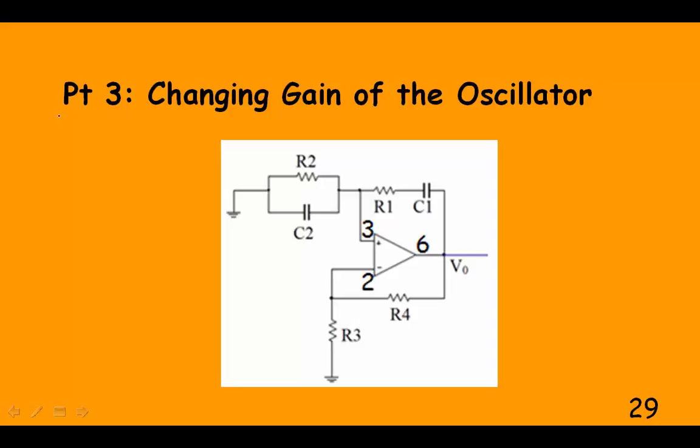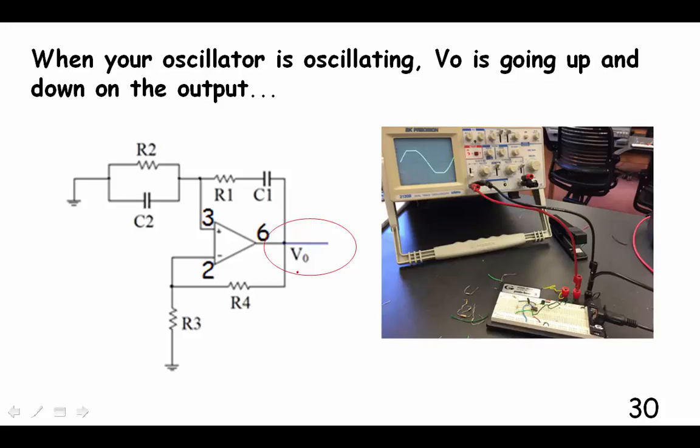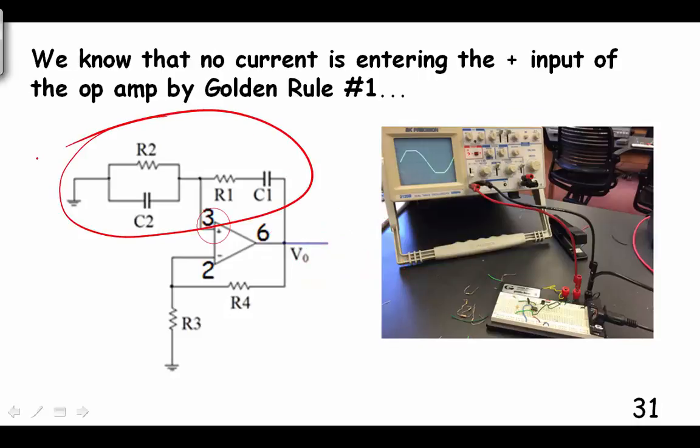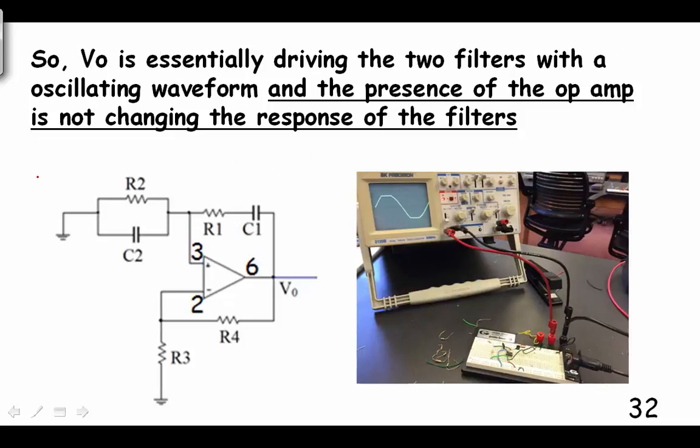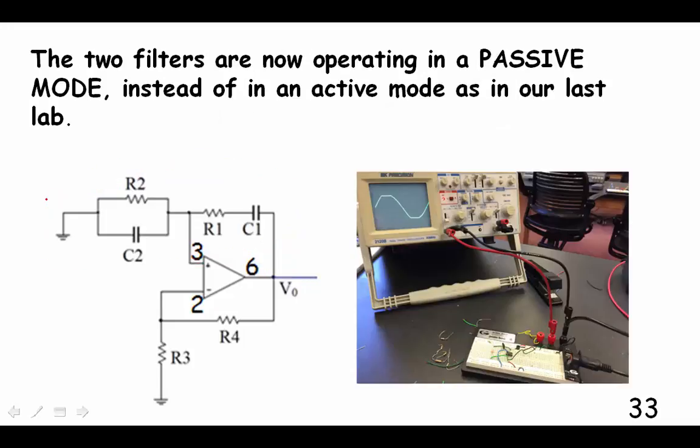Let's look to part three of the lab, changing gain of the oscillator. When your oscillator is oscillating, the output voltage is going up and down on the output, driving this filter circuit that we've built. We know that there's no current going into the op amp here. So this point is not going to be altered by the op amp because there's such high impedance on the input impedance of the op amp. It's one of our golden rules. This output voltage is essentially driving our filter circuit. The presence of the op amp is not changing the response of the filters.